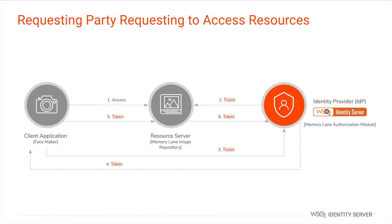The Facemaker application sends this ticket to the authorization server and gets a token in return. Next, the Facemaker application attempts to access the protected resource by providing this token. The Memory Lane application validates the token by passing it to the authorization server. During the authorization, the policies that were configured earlier will be evaluated against the token request. Once the validation is successful, Jane gains access to the Memory Lane resources.